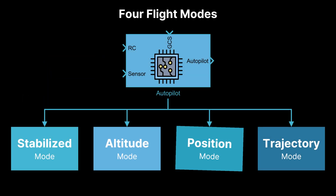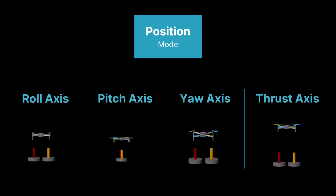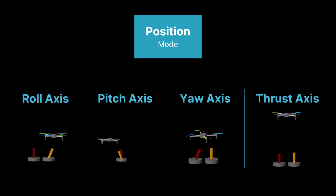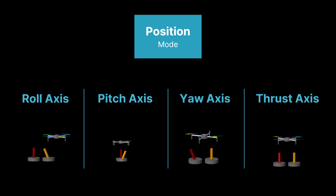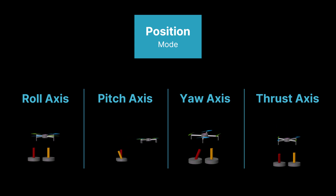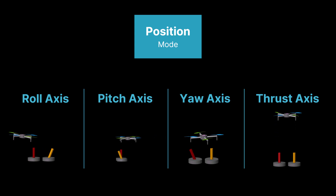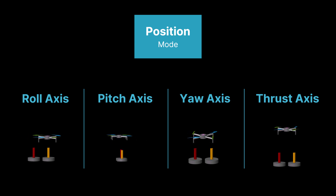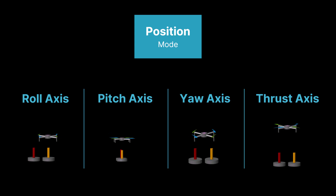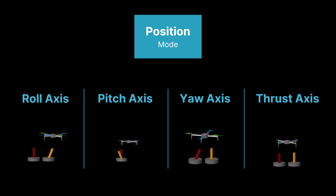Let's move on to position mode. Position mode, also known as loiter mode, the autopilot maintains horizontal position, altitude, and heading, i.e. yaw angle. The operator can control movement with the sticks, but when released, the quadcopter holds its horizontal position, altitude, and heading. This mode is ideal for aerial photography, inspections, or hovering in a fixed location without constant manual input.